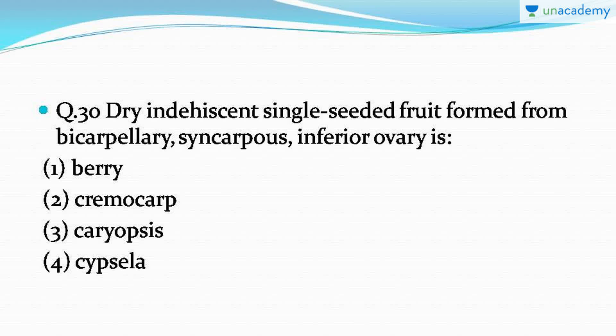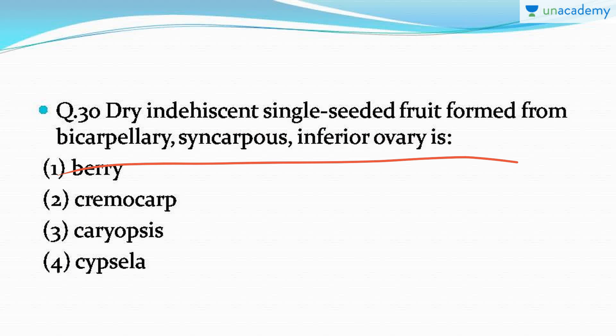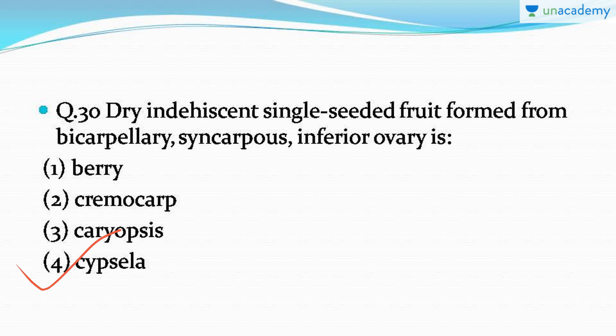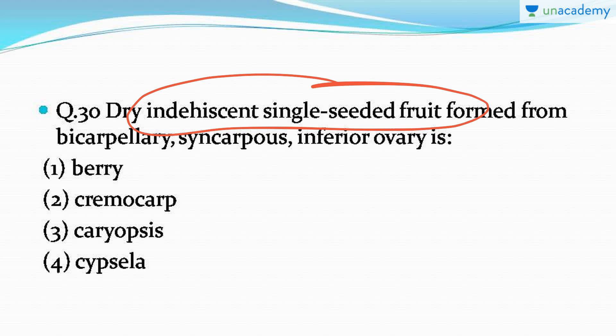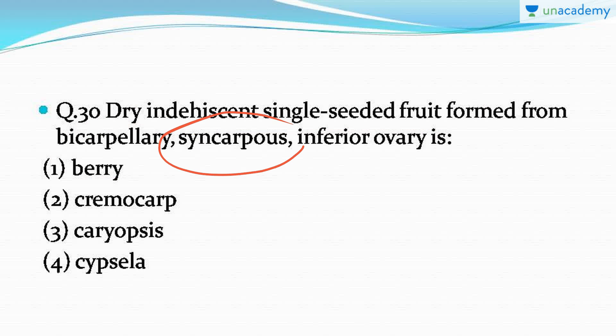Question number 30: a dry indehiscent single-seeded fruit formed from a bicarpellary syncarpous inferior ovary — which fruit type has all these characters? It's a very important question from the morphology chapter, and such questions are frequently asked in NEET. The correct answer is option number four: cypsela. Cypsela is the type of fruit that is dry, indehiscent, single-seeded, and formed from a bicarpellary syncarpous inferior ovary.